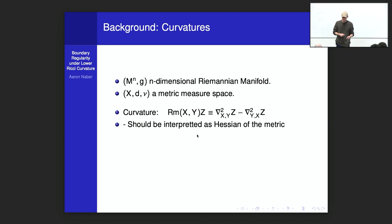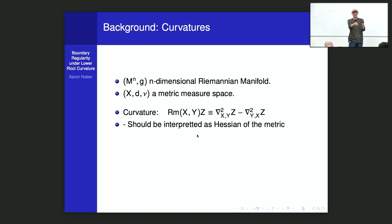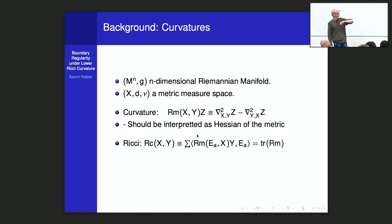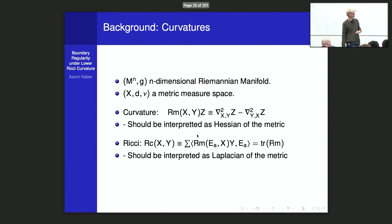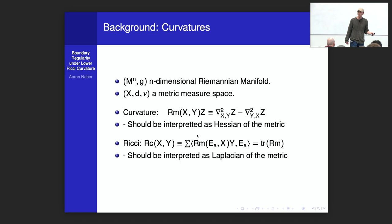The Ricci curvature is the trace of the Riemann curvature tensor — you pick an orthonormal basis, stick it into the slots, and sum up. If we interpret Riemann curvature as the Hessian of the metric, then Ricci curvature is the Laplacian of the metric. Suddenly it's not shocking why Ricci curvature appears everywhere in analysis on a manifold — it's the same reason Laplacians appear everywhere in analysis.